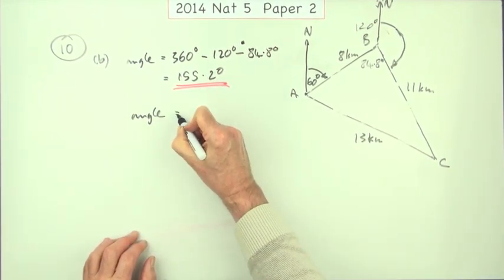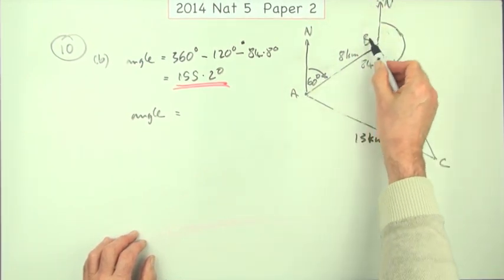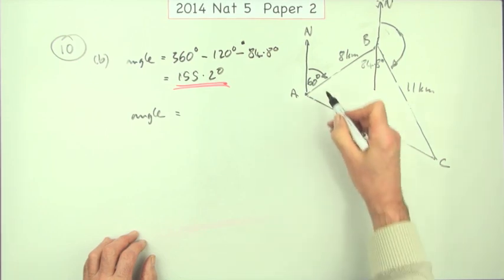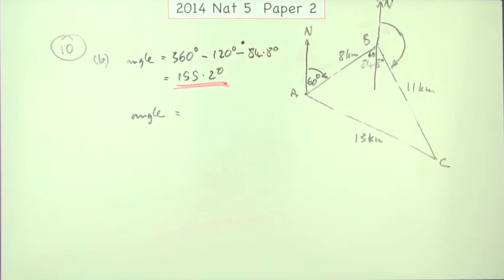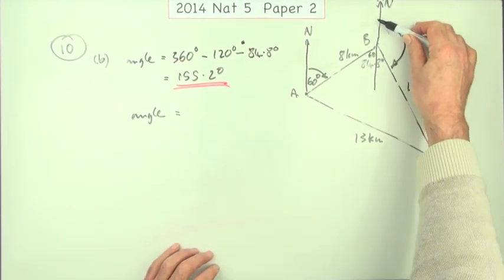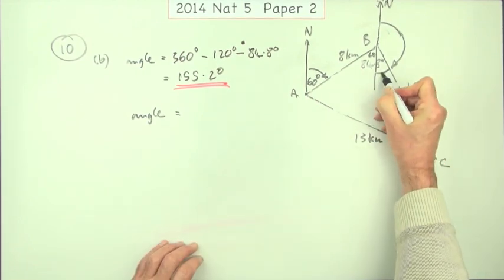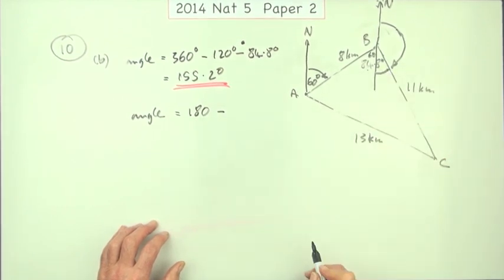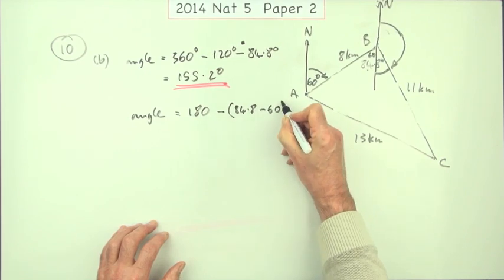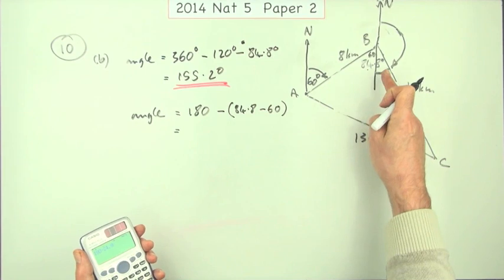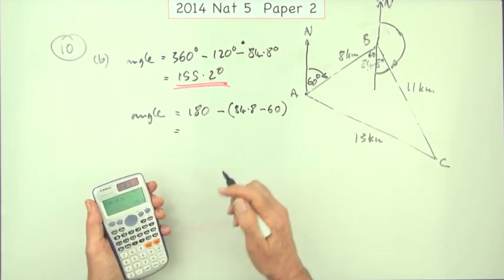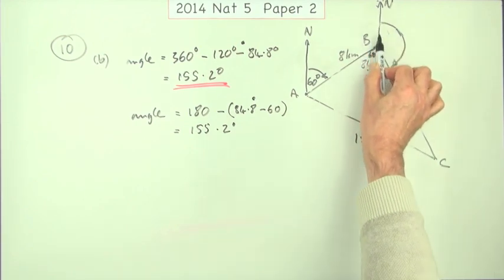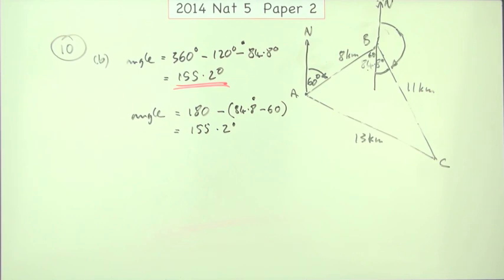Alternatively, you can extend the north line all the way through and use alternate angles. If that angle is 60, the alternate angle is also 60. Then this angle and the part you want make 180, so you subtract the excess of 84.8 over 60: bearing = 180 − (84.8 − 60) = 180 − 24.8 = 155.2 degrees. This gives the same answer. Using north extended all the way through for alternate angles is quite often the technique you use.